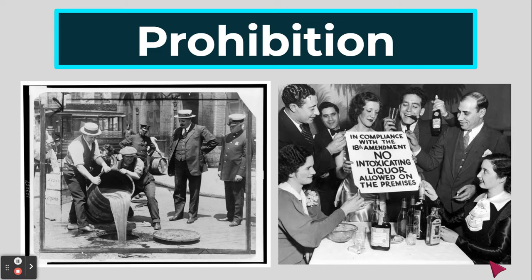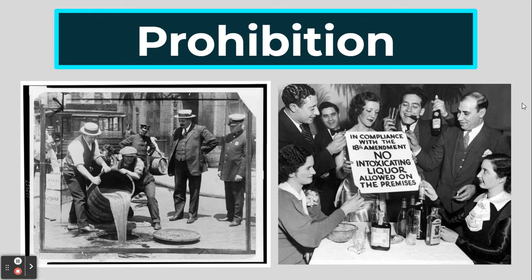But not everybody followed it. In fact, very few people followed the 18th Amendment. You can see that this sign says 'in compliance with the 18th Amendment, no intoxicating liquor allowed on the premises,' while they're standing around seven or eight different bottles of alcohol. Even though alcohol was illegal, many people still bought it, drank it, and made it. They would go to places like speakeasies to drink it, which was like a secret bar that you had to have a code to get into.